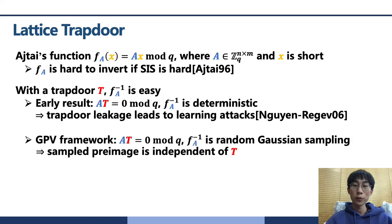Then in the GPV framework, the inverting of fA is not a deterministic process, but a random Gaussian sampling. And the sampled preimage is independent of T, so there is no trapdoor leakage.